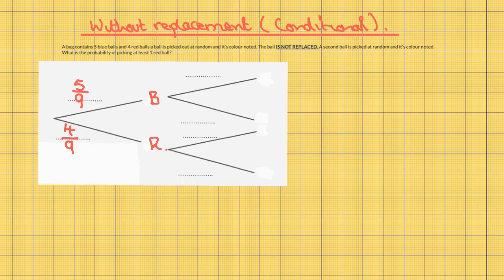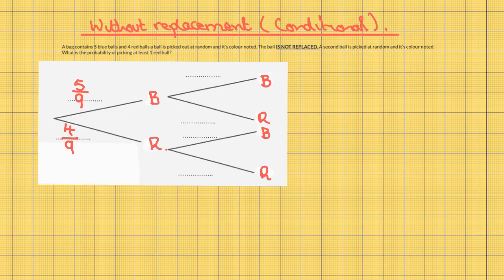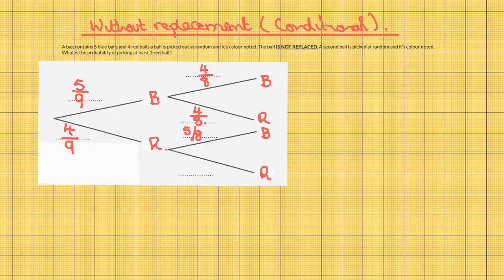For the second pick you could also pick blue or red, but because the first ball was not replaced, the probabilities have changed. If the first ball was blue, the probability of blue on the second pick is now four out of eight and the probability of red is now four out of eight. If the first ball picked was red, the probability of blue on the second pick is now five out of eight and the probability of red is now three out of eight.